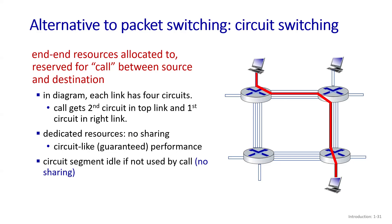In circuit switching, resources are allocated and reserved in advance. However, the disadvantage is that since resources are reserved, the full capacity of the link cannot always be used. For example, if the link is divided into four channels and each user can only use one channel, and the other three users are not active, then three channels are free and bandwidth is wasted. In packet switching, if the bandwidth is free, a user can take advantage of the full link capacity — but there are disadvantages like queues being created.